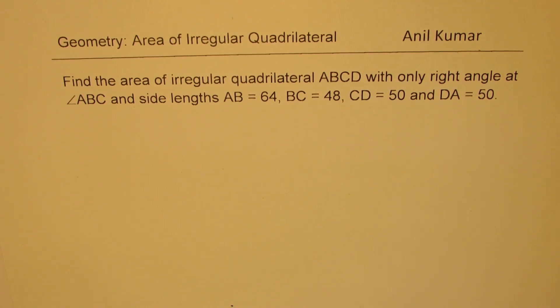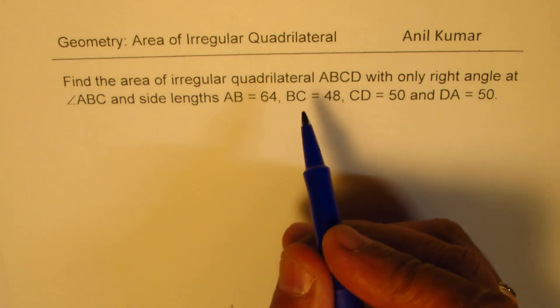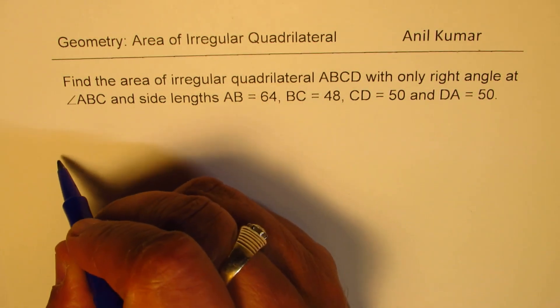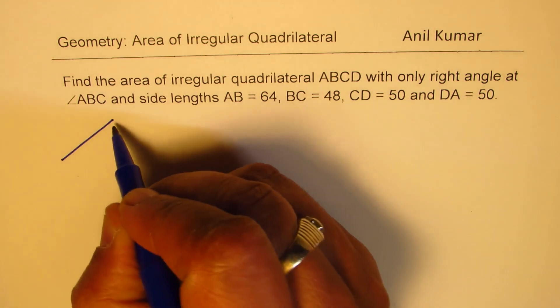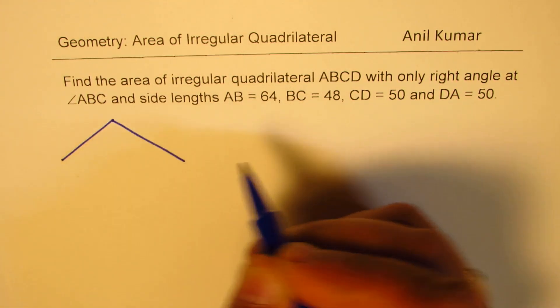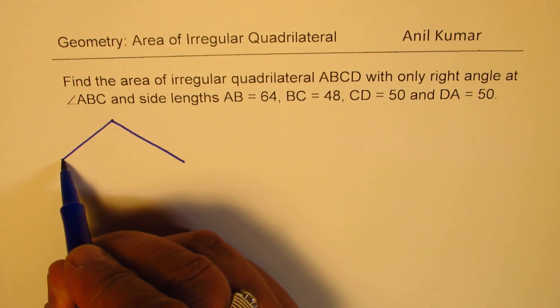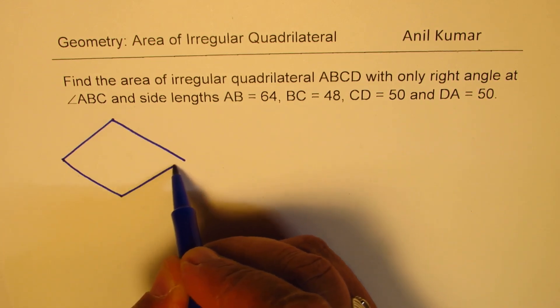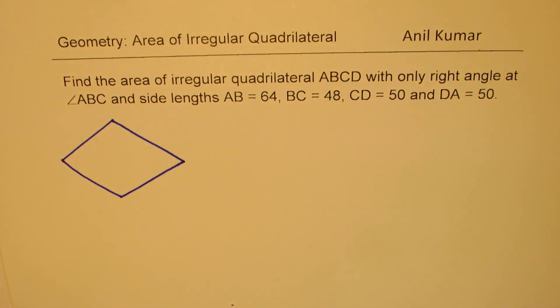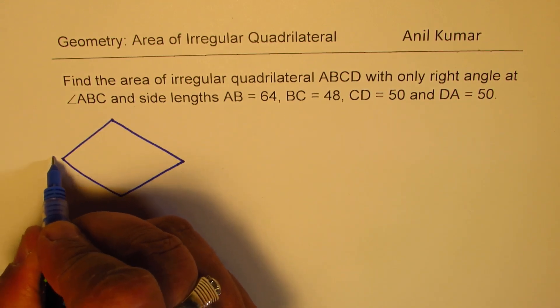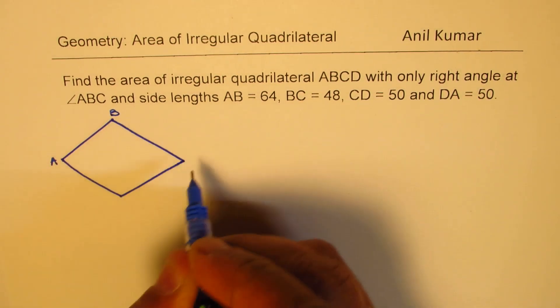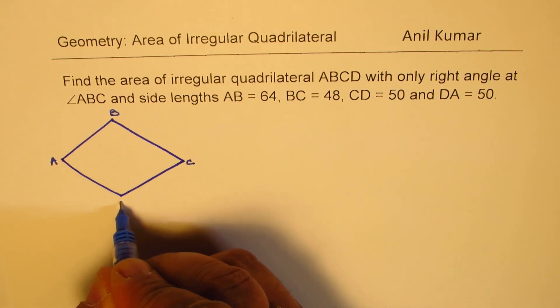You can always pause the video, answer the question, and then look into my suggestions. Let's try to sketch one quadrilateral. So here is a rough sketch. Quadrilateral means definitely four sides, and we have these two equal sides, which is 50 and 50. So let's say that is our quadrilateral. ABCD, let's label it A, B, C, and D.